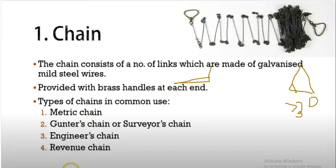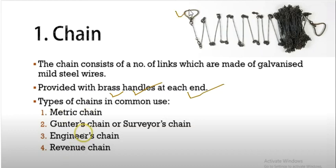Now, coming to the types of chains. Chains are different types. The chain consists of a number of links which are made of galvanized mild steel wires. Then we can say it is provided with brass handles at each end to protect the ends. These are brass handles provided.